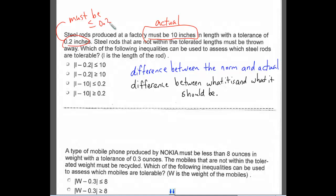Looking at my answer choices here, I can go ahead and eliminate the first two. We take the absolute value of the difference between the norm and the actual, and it's got to be less than or equal to 0.2.